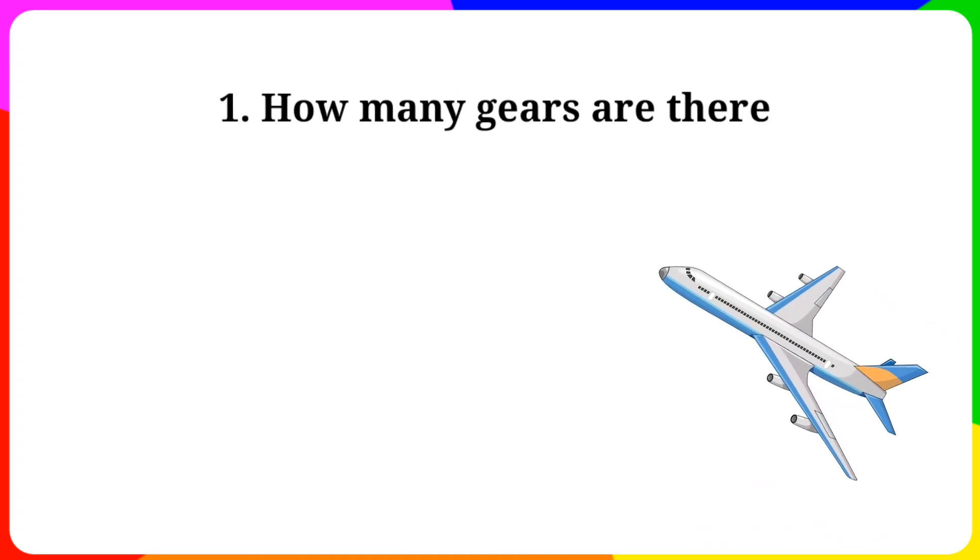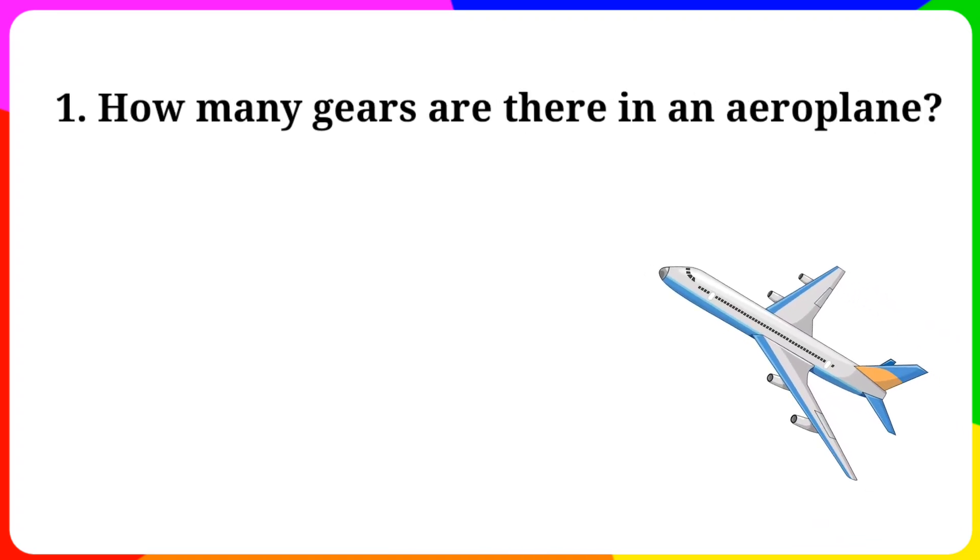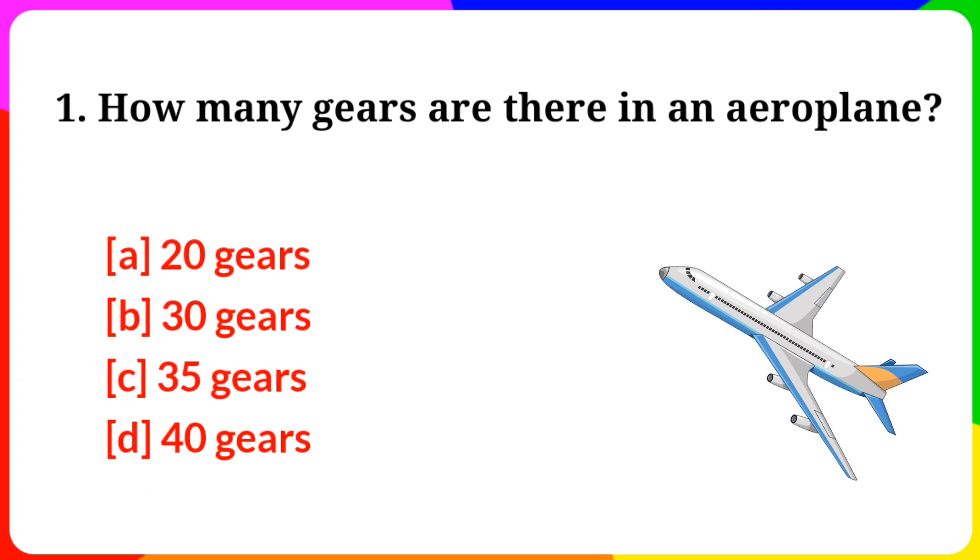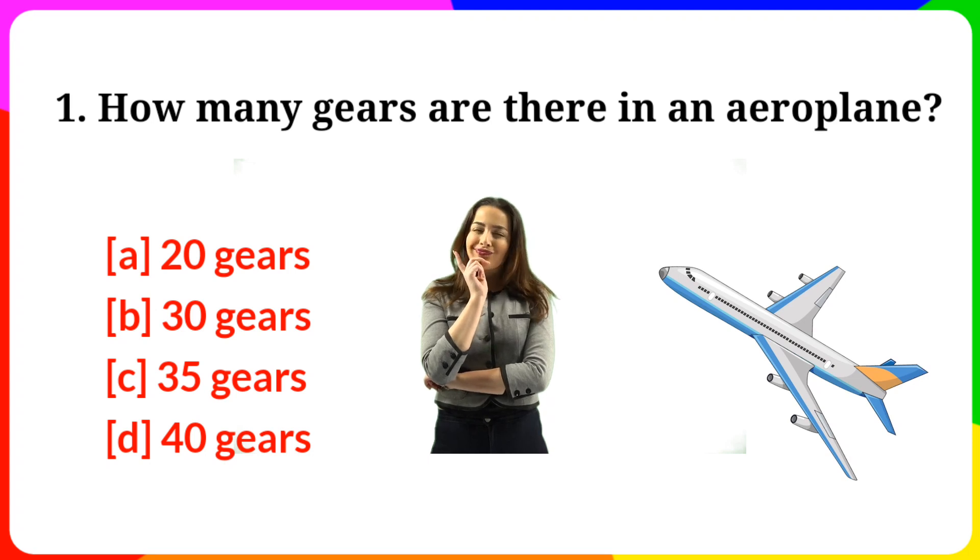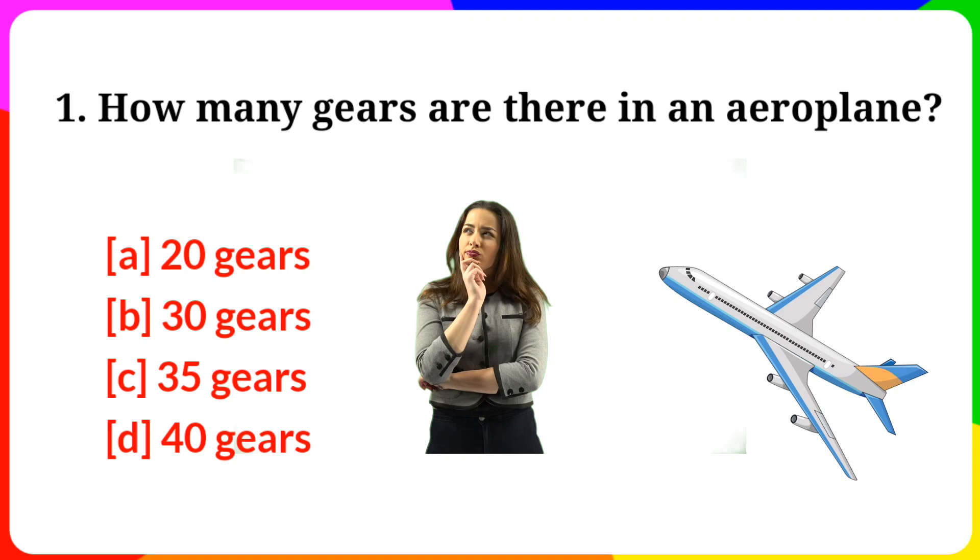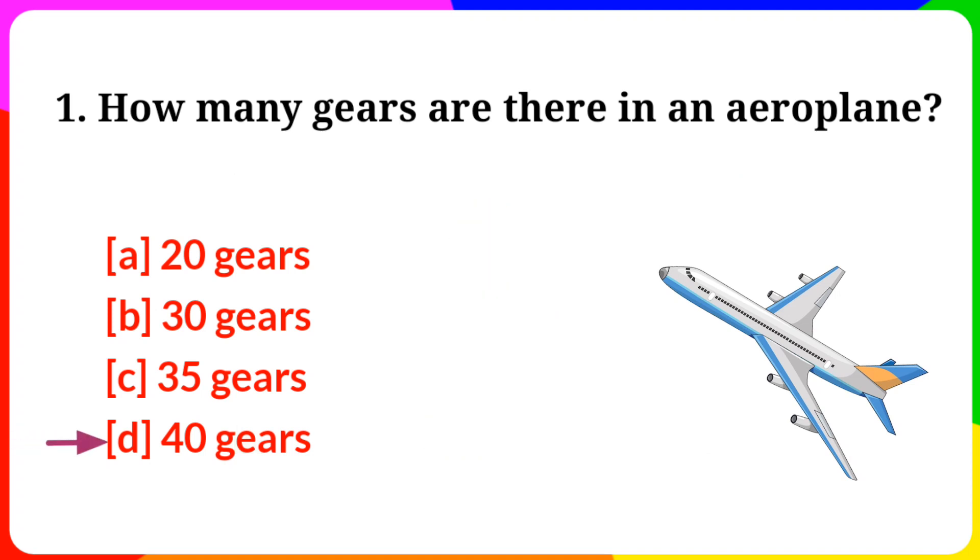Question number 1. How many gears are there in an airplane? Option A: 20 gears. B: 30 gears. C: 35 gears. D: 40 gears. Answer is option D, 40 gears.